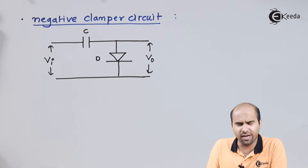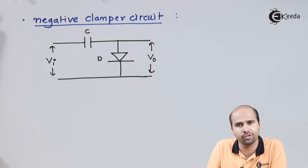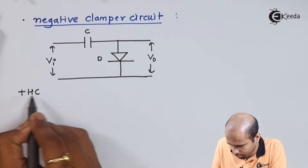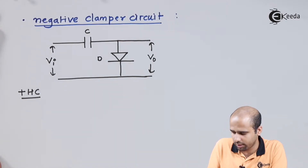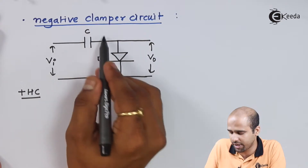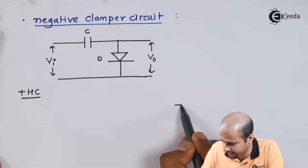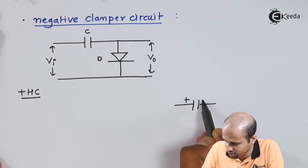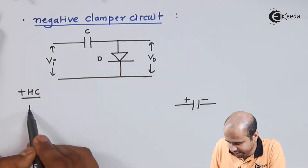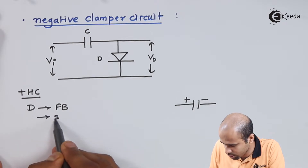Let us study the positive half cycle. We will be using the operation of the circuit — one is positive half cycle and another is negative half cycle. In the positive half cycle, the input voltage leads to charging the capacitor C in the positive and negative direction. In the positive half cycle, we draw a separate diagram: the capacitor is charging, and the diode will become forward biased.